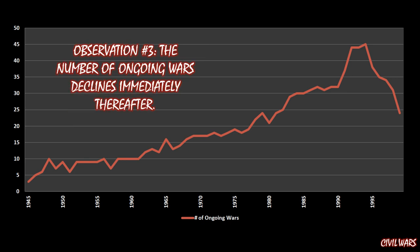The last thing worth noticing is that the number of ongoing wars declines immediately thereafter. One reason might be that those wars that started with the Soviet Union's demise quickly ended — the spike occurred because the Soviet Union crumbled, and there weren't a bunch of other wars starting up as a result. You just saw a quick blip on the radar in 1990 where there were a bunch of extra wars going on, but that quickly dies off thereafter.